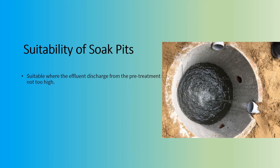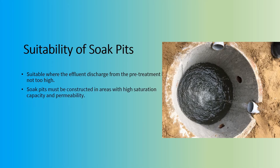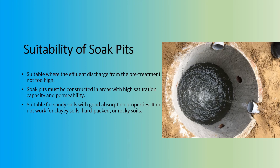Soak pits are suitable where the effluent discharge from the pre-treatment is not too high, which can prevent clogging and related hygiene issues. Soak pits must be constructed in areas with high saturation capacity and permeability. In general, they are most suitable for sandy soils with good absorption properties. They do not work for clay soils, hard-packed, or rocky soils, and are preferred in locations where the water table is low.